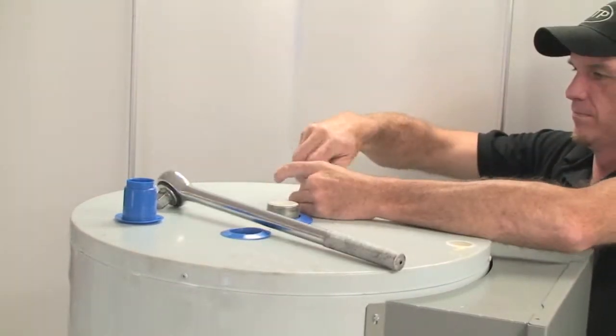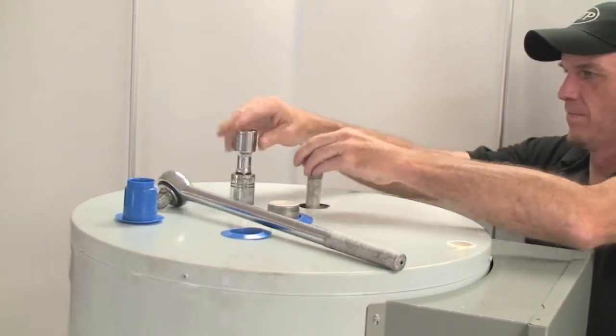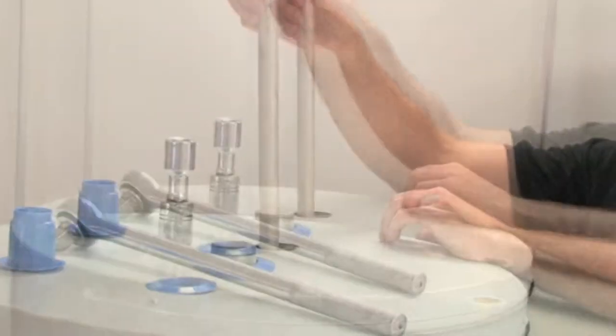Keep in mind a breaker bar may be needed to remove anode rod and you must assure tank stays in place and does not rotate as this could cause further damage. Inspect anode rod and replace as necessary.